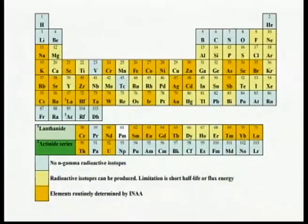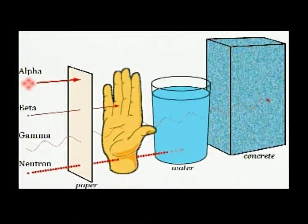In the environment, radiations are released by natural and man-made sources. Naturally occurring radiations are released in the form of alpha, beta, and gamma rays. Some additional radiations are also produced from air, soil, rocks, and groundwater through various interactions.